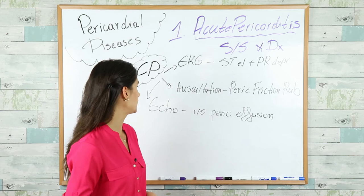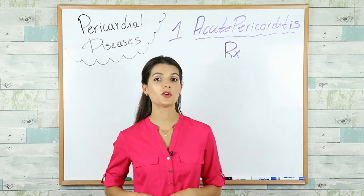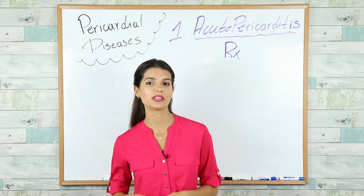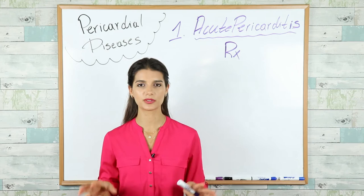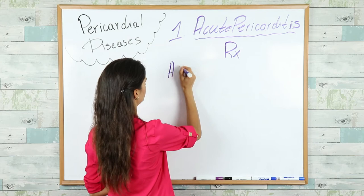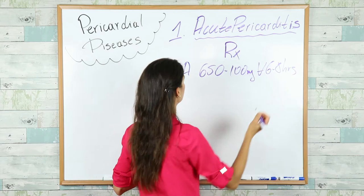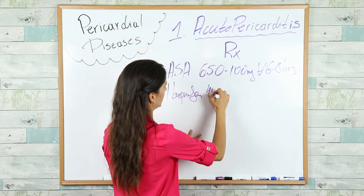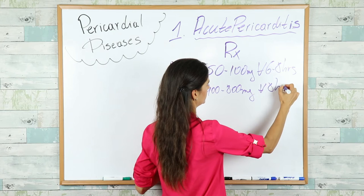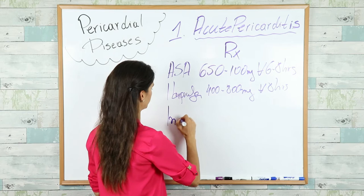We treat acute pericarditis with high doses of NSAIDs. You can use aspirin 650–1000 mg every 6–8 hours, ibuprofen 400–800 mg every 8 hours, or indomethacin 50 mg every 8 hours. You don't need to memorize the dosages, but it won't hurt for future clinical practice.